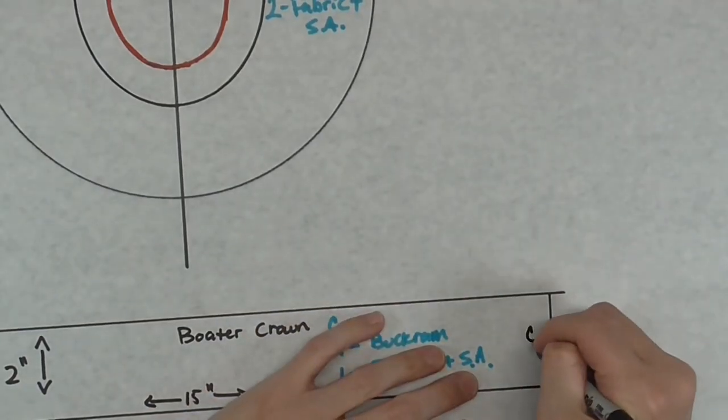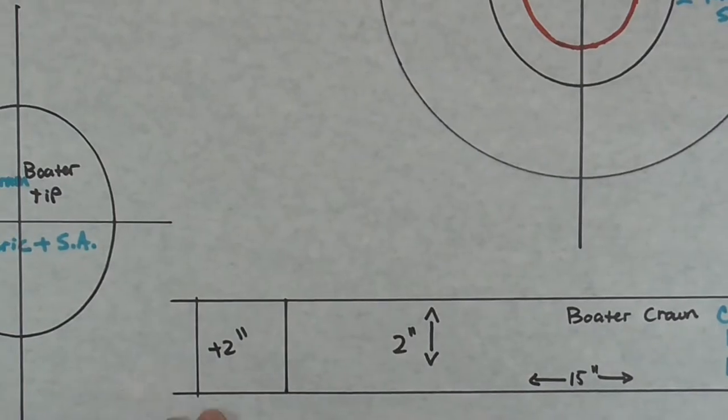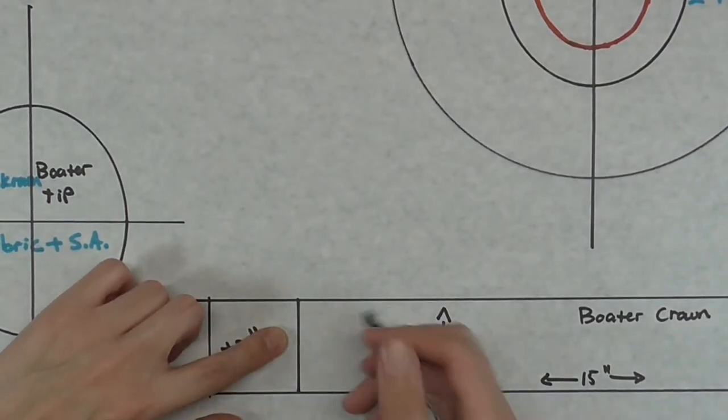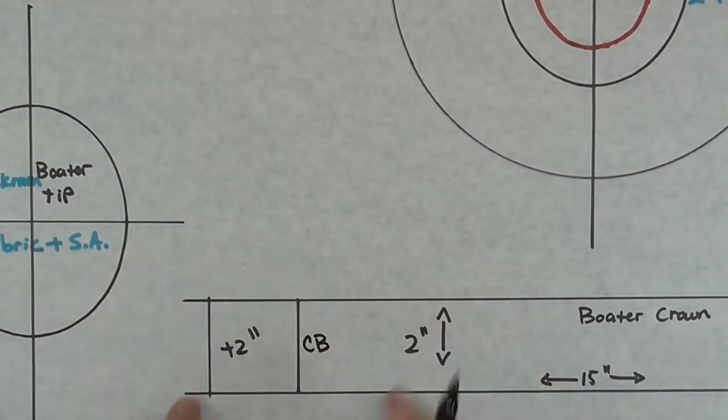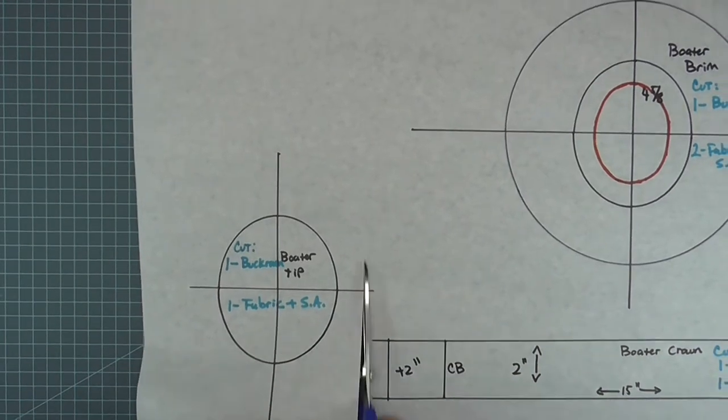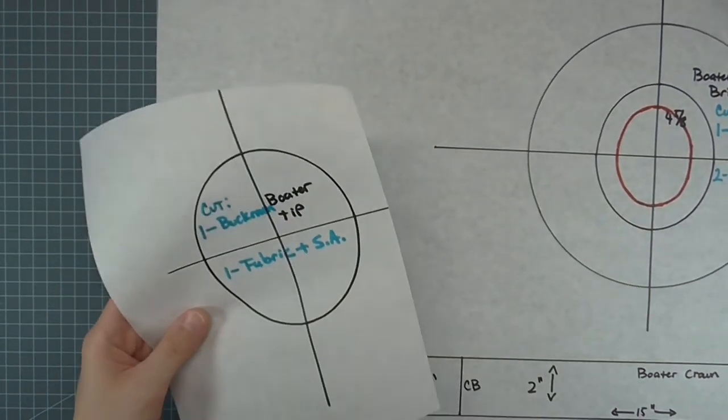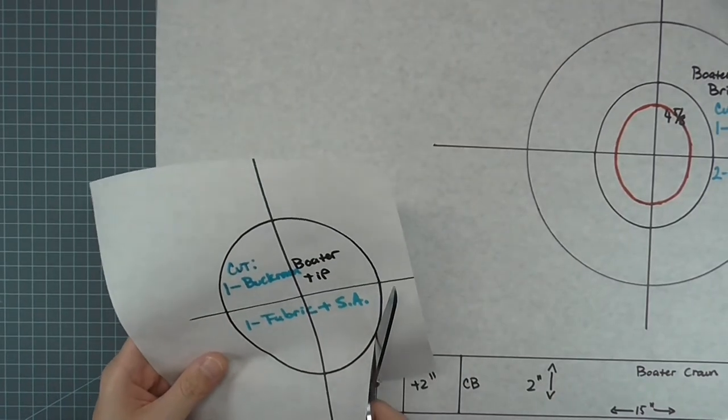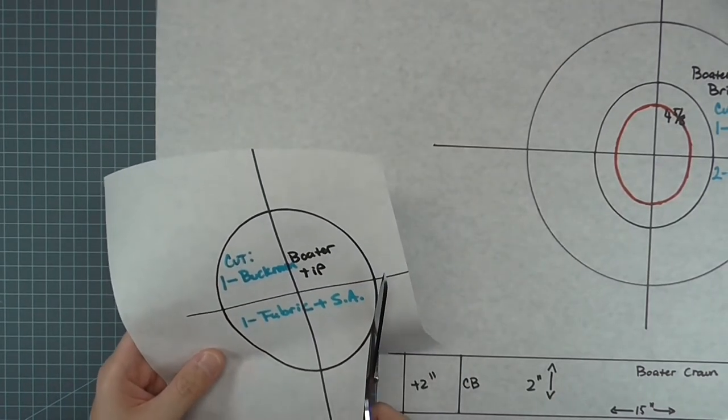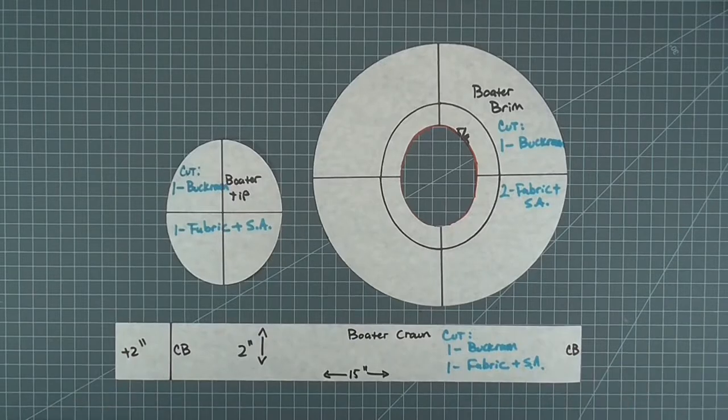Label the original termination lines center back. Now you can cut out the paper pattern pieces. This is how my paper pattern looks.